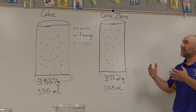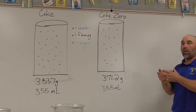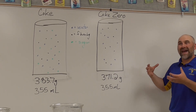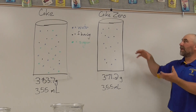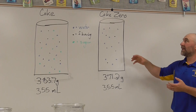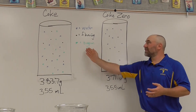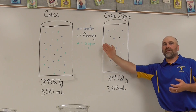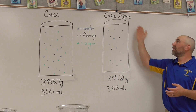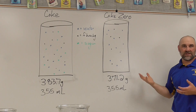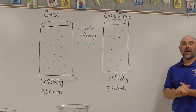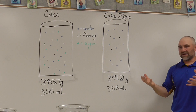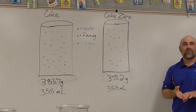And that explains the difference in density between Coke and Coke Zero. It's that difference in the amount of mass or matter inside the can — the Coke has the sugar compound, while the Coke Zero does not. And that explains this video.